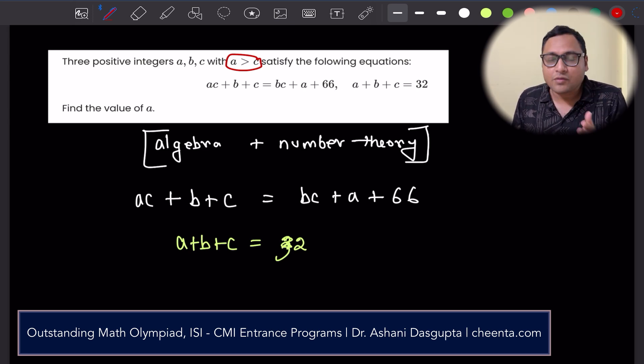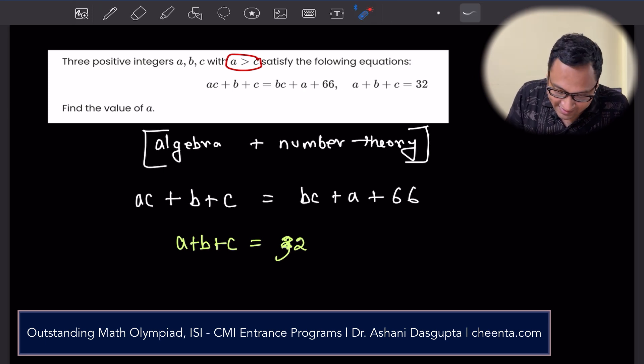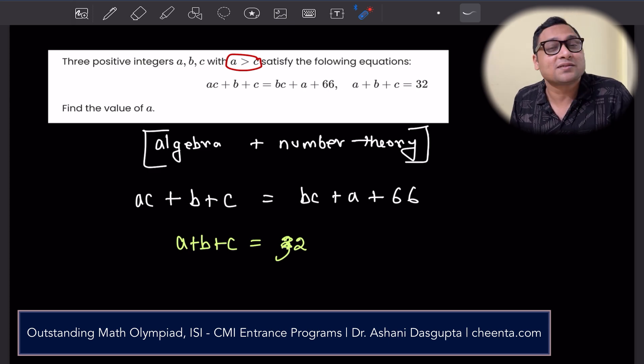We want to find out the value of a. One point that you should remember is that if you have three unknowns, in this case a, b, c, there are three unknowns, then usually you need three equations to solve them.